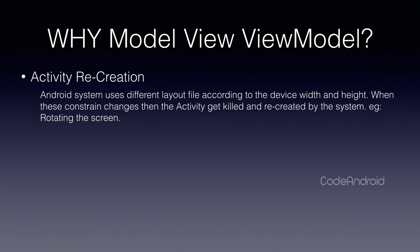Activity Recreation: The Android system uses different layout files according to the device width and height. When the activity window gets resized, Android looks for the appropriate layout. If the layout changes, then the activity will get recreated. For example, while rotating the screen, the activity should use a layout file from layout-land.